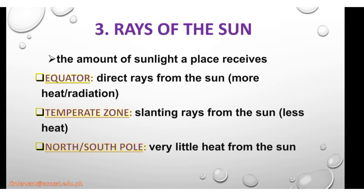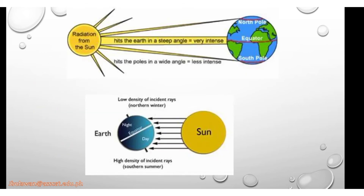The third factor is the rays of the sun — the amount of sunlight a place receives. Near the equator, there are direct rays of sunlight, so more heat and more radiation. For the temperate zone, the rays of the sun are slanting, so less heat. At the south and north poles, there is very little heat from the sun, resulting in lower radiation and lower temperatures.